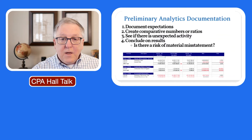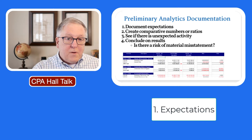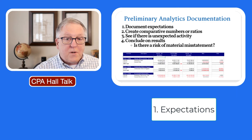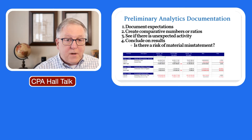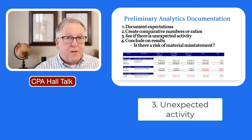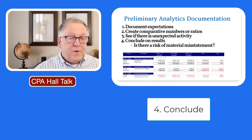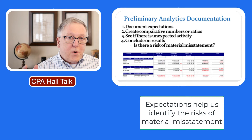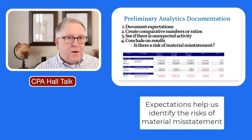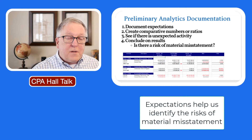As you do this, you need to create some expectations. There are four points about documentation of preliminary analytics. One: document your expectations. Two: actually create the comparative numbers or ratios. Three: see if there's any unexpected activity. And finally, conclude — have you detected any risk of material misstatements or not? Without expectations, we're simply bringing numbers together and comparing them, but if they don't behave correctly and we haven't really thought about what the expectation is, we may not identify a risk of material misstatement that we should have.